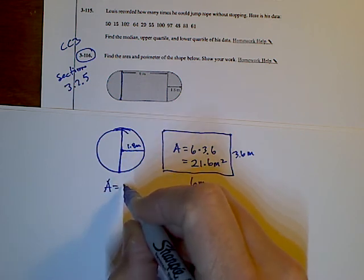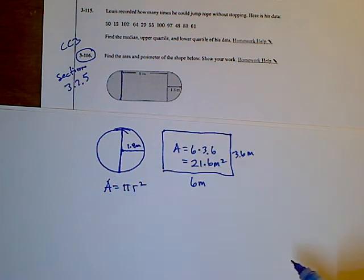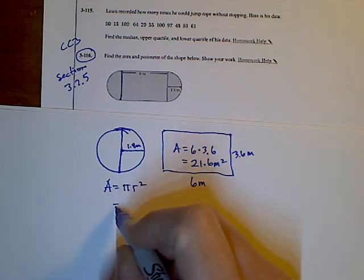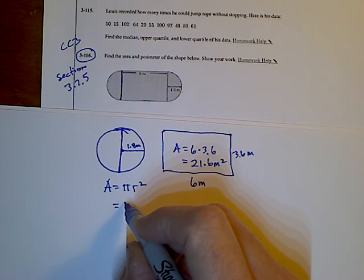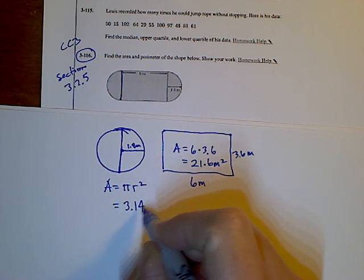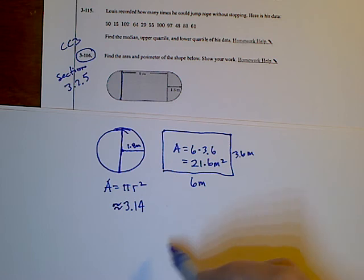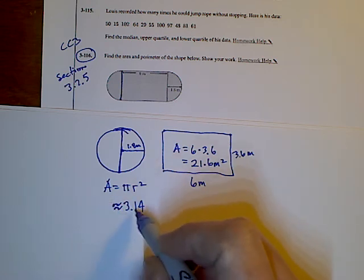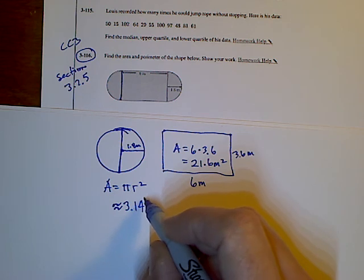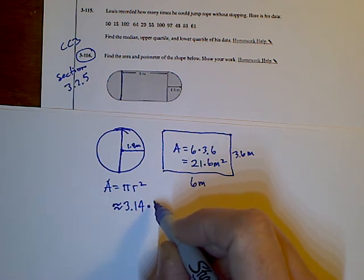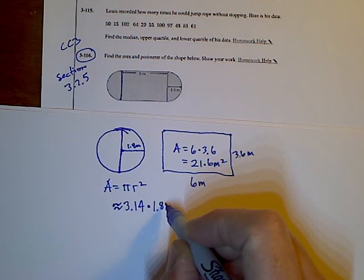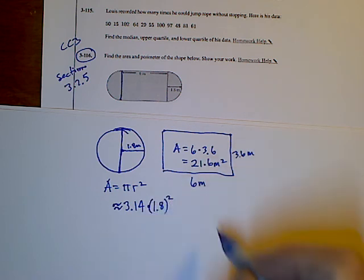And then area of a circle. Remember, area of a circle is pi times the radius squared. In this case, we'll go ahead and estimate pi to be 3.14. And I'm going to use little squigglies for my equal now because my area is going to be estimated. I'm not getting an exact with the pi being estimated 3.14. So 3.14 and I multiply that times the radius of 1.8, and I have to take that radius and square it.